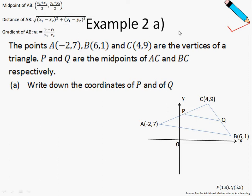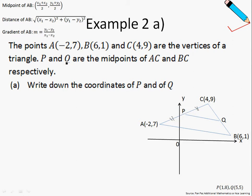In example 2a, we're given the coordinates of three points A, B and C, and these three points form a triangle, as you can see from the sketch over here. We are told that point P is the midpoint of AC, so this means that AP is equal to PC, and we are also told that Q is the midpoint of BC, so this means that distance CQ is equal to distance QB. Now we are asked to write down the coordinates of P and Q.